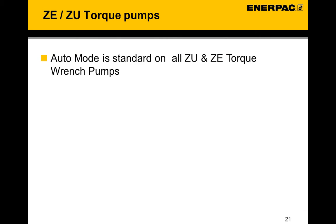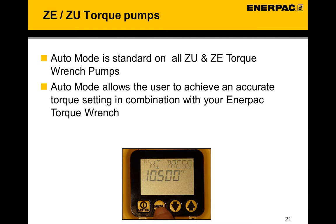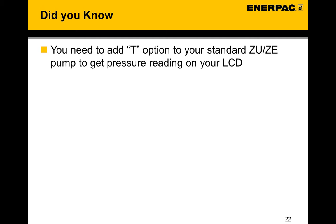ZE/ZU torque pumps: auto mode is standard on all ZU and ZE torque wrench pumps. It allows the user to achieve accurate torque settings in combination with the Anapak torque wrench. With auto mode on, the operator only needs to keep the advance button pressed — the torque wrench will automatically advance and retract until it reaches the set torque value. Auto mode gives a significant time saving over manual operation, where the operator needs to activate both advance and retract buttons until reaching the required torque value. Note: you need to add the T option to your standard ZU/ZE pump to get a pressure reading on your LCD, as the pressure transducer is not standard.